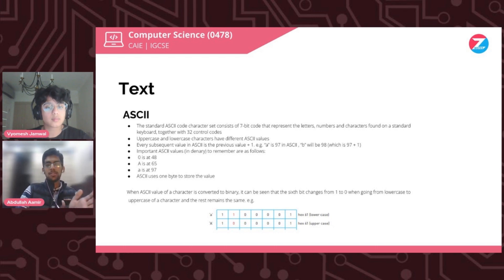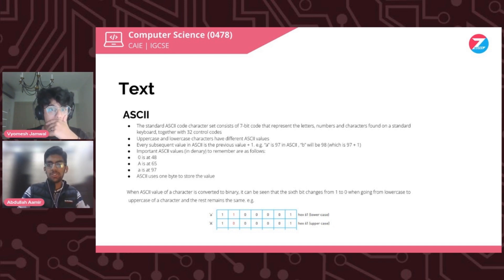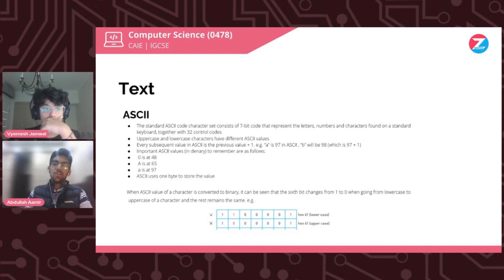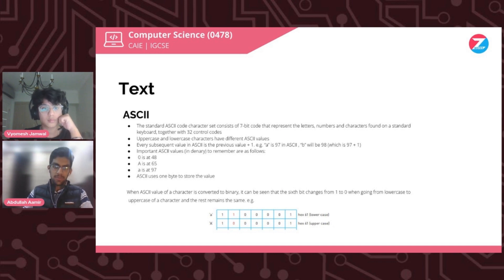ASCII is a standard character set that consists of a seven-bit code, where each code represents a letter, number, and character on the standard keyboard, together with 32 control codes. Those 32 control codes cover things like the control key, shift key, caps lock, and all of that. The seven bits also represent letters, numbers, and so on.